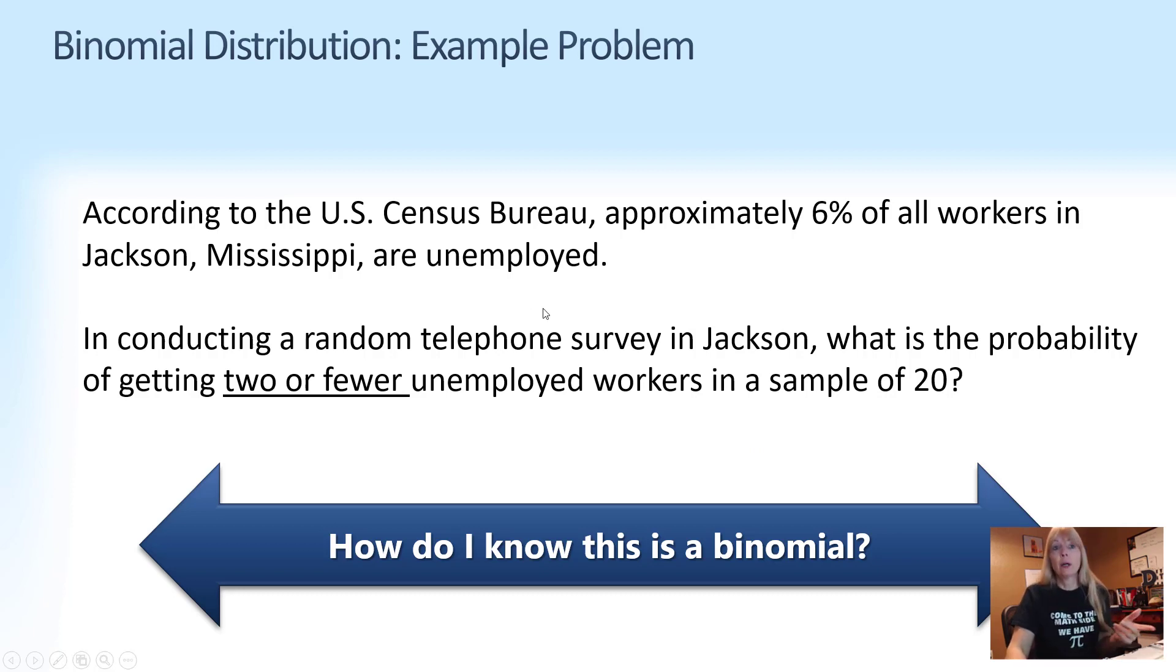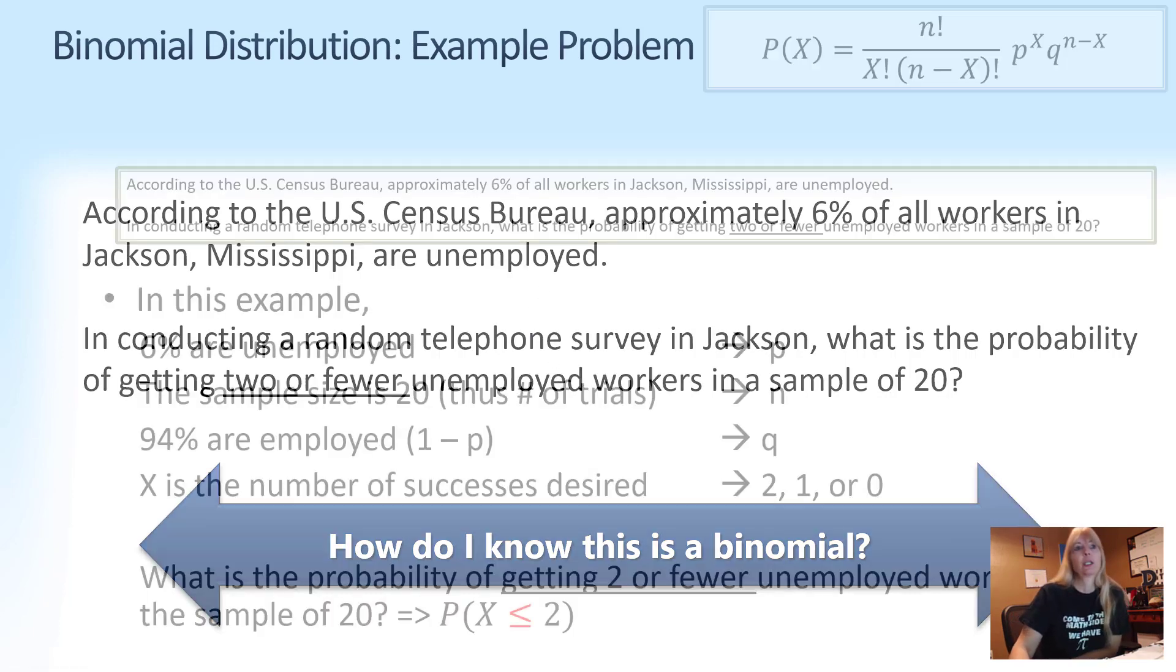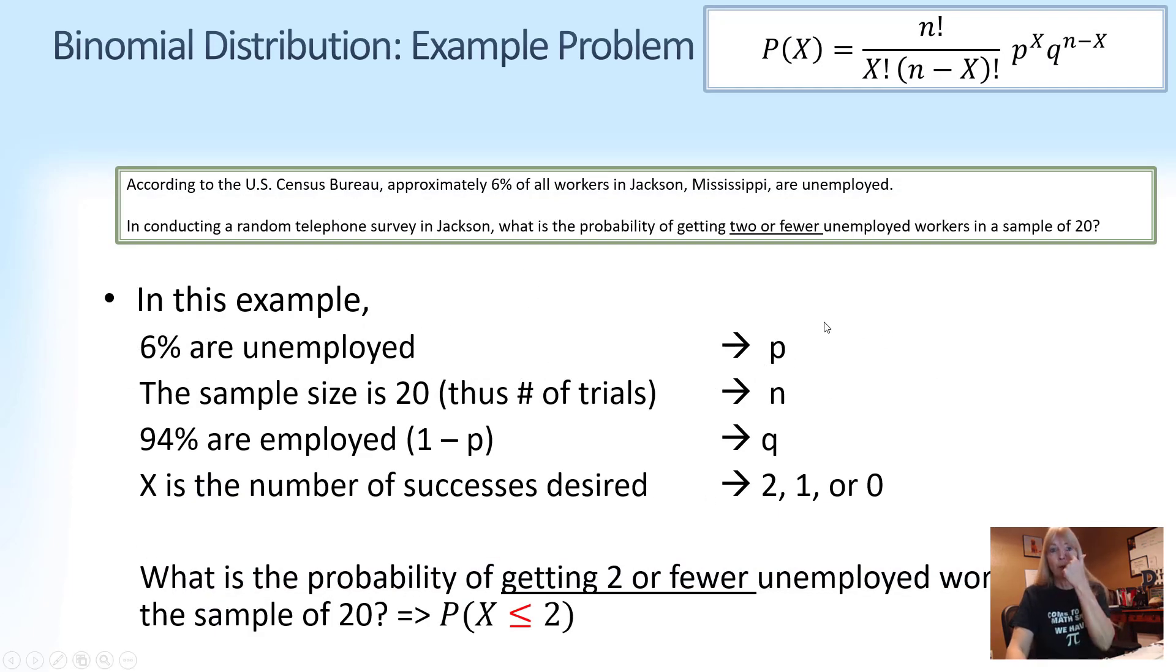They're either employed or they're unemployed. So there's only two things that could actually happen. So what I want to do is show this worked out by hand so you can kind of see it. And then you're going to want to use Google Sheets. So it says 6% are unemployed. So that's my probability of success. The word success doesn't mean a good thing. Unemployed.